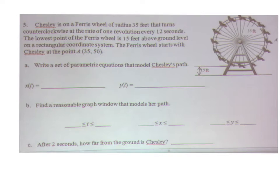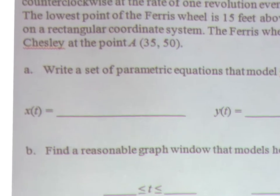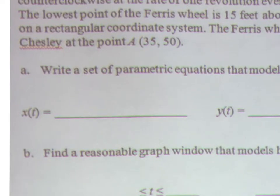So in this Ferris wheel problem, we have parametrically speaking this Ferris wheel that's going around one revolution every 12 seconds. So the first thing we have to do is write some equations, and the general equation would be...